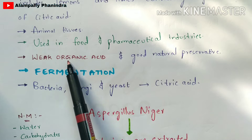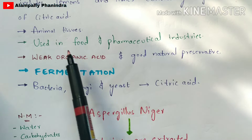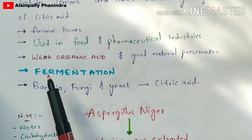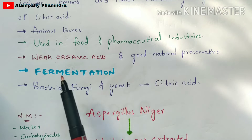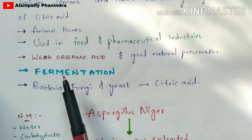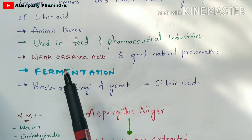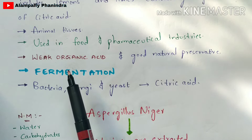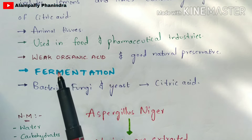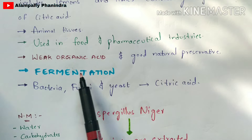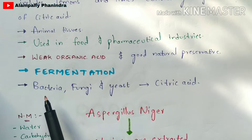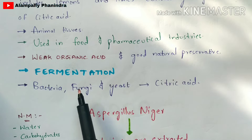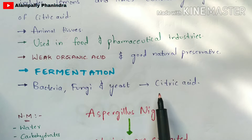Citric acid is considered a weak organic acid, and normally it can be produced by a process called fermentation. A detailed explanation of fermentation will be given in further videos; here we will focus on how citric acid is produced using fermentation technology. For the production of citric acid, bacteria, fungi, and yeast are the types of organisms mainly used.